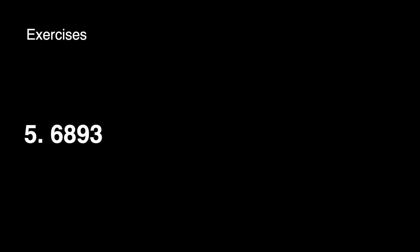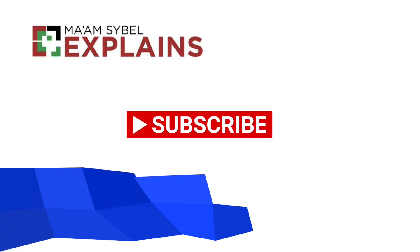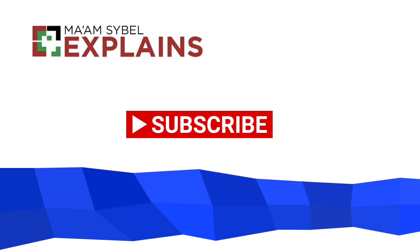For the next one, we have 5 and 6,893 ten-thousandths. The place value of 9 is thousandths, and the value is 9 thousandths. And that's it — you're done! Don't forget to hit the like button if you think this is helpful. Till next time!